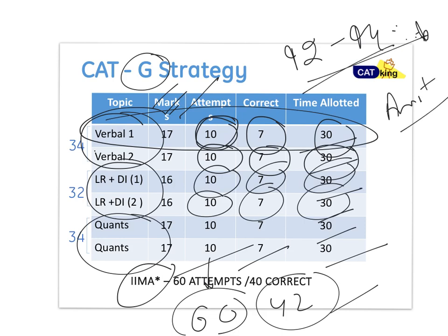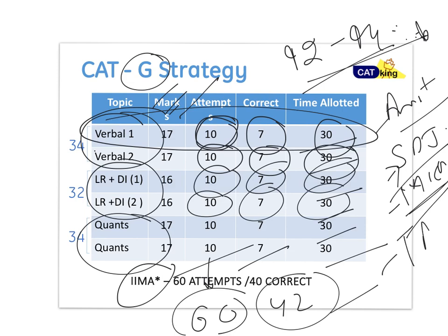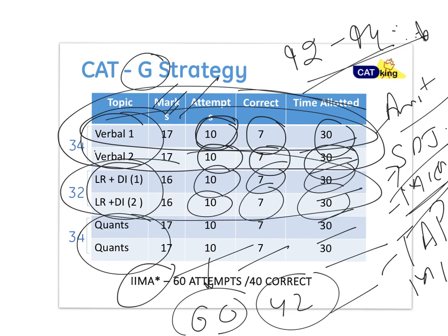42 correct equals 92 to 94 percentile — signed by blood — which means you can get IIM Amritsar and maybe a couple more IIMs. Last year the last person to get IIM Bangalore was at 90 percentile. With this strategy you can definitely get SPJ Mumbai, MICA, colleges like TAPMI, Nirma, and more. If you're nervous about CAT, just pick up your questions, and every one hour take a break. Any questions, write in the comments or reach me on Facebook at Rahul Cat King.